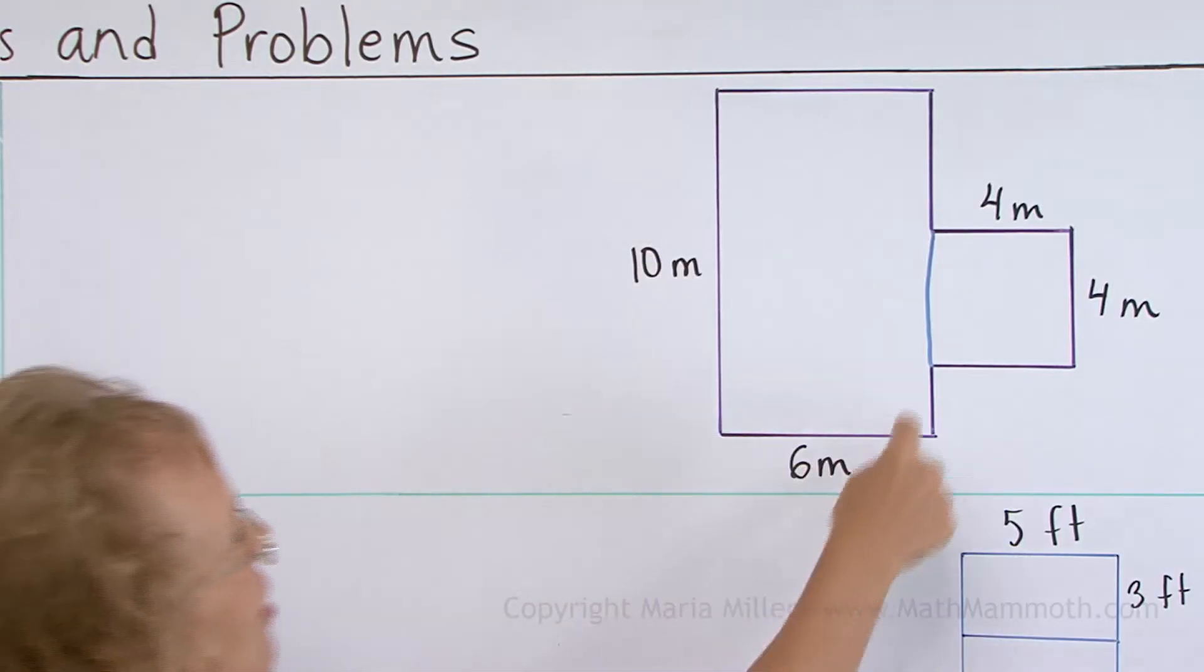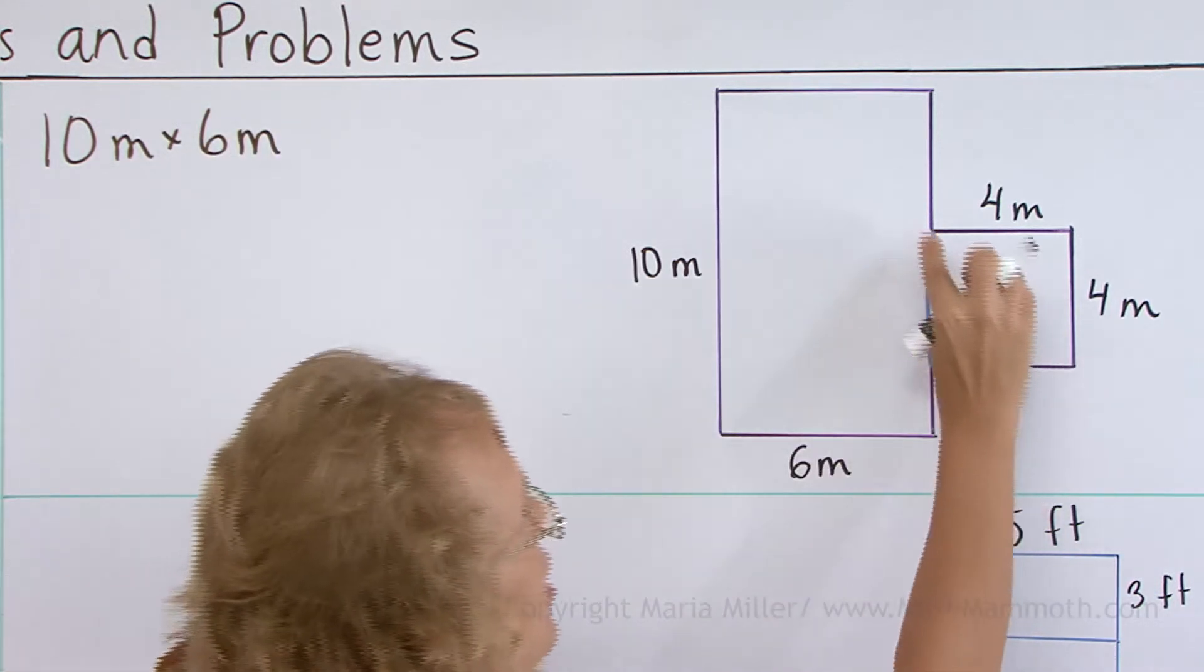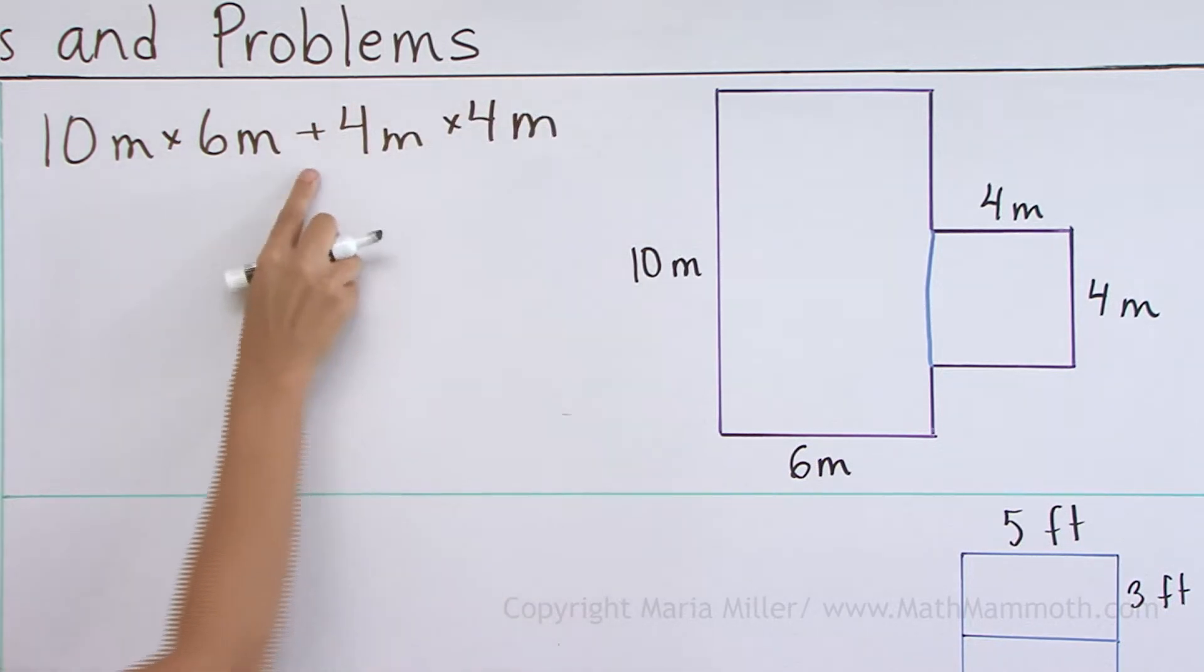This rectangle here would be 10 meters times 6 meters, right? So let me write here, 10 meters times 6 meters. And then the other one is 4 meters times 4 meters, right?